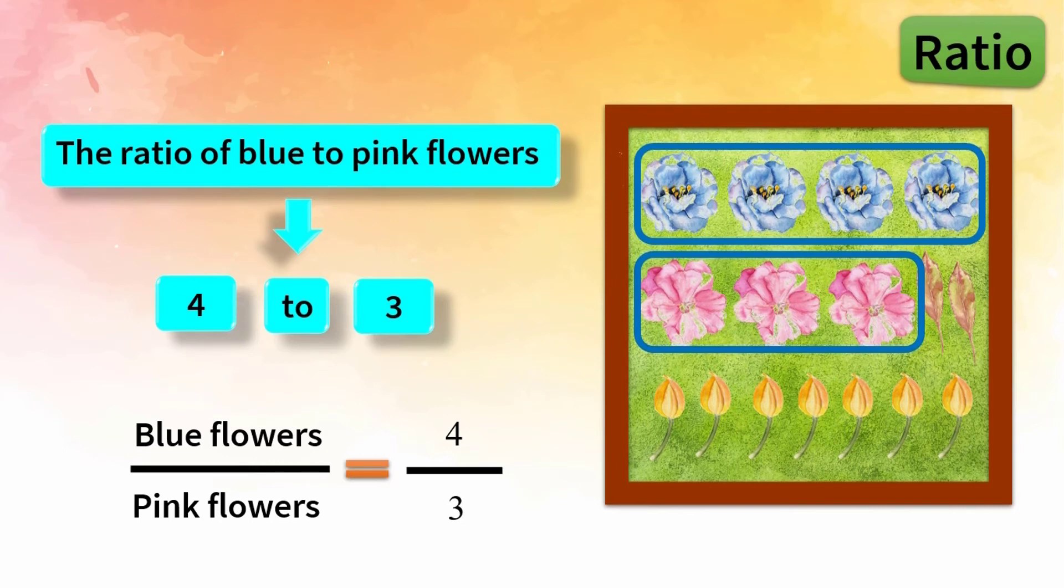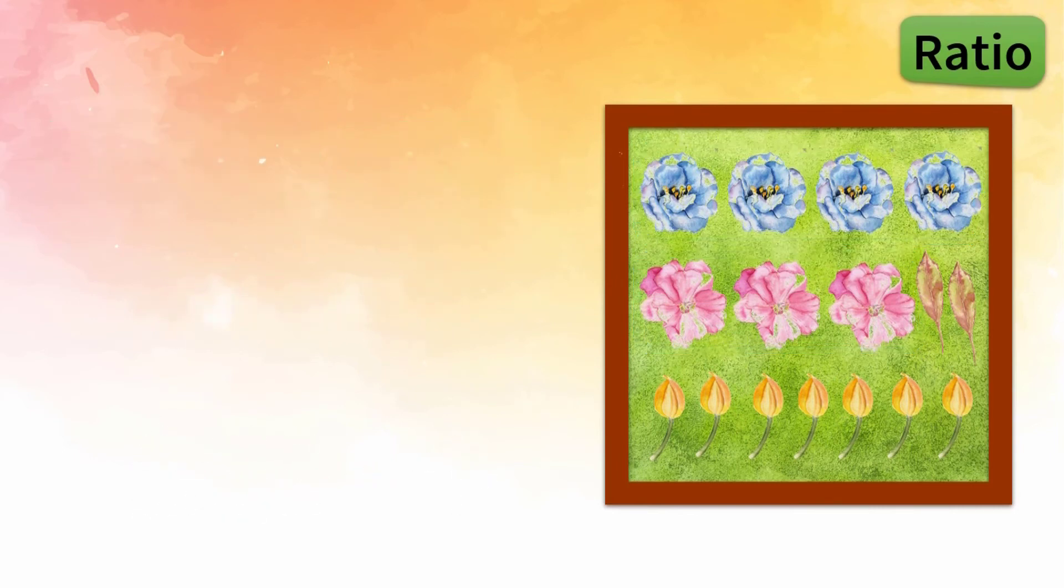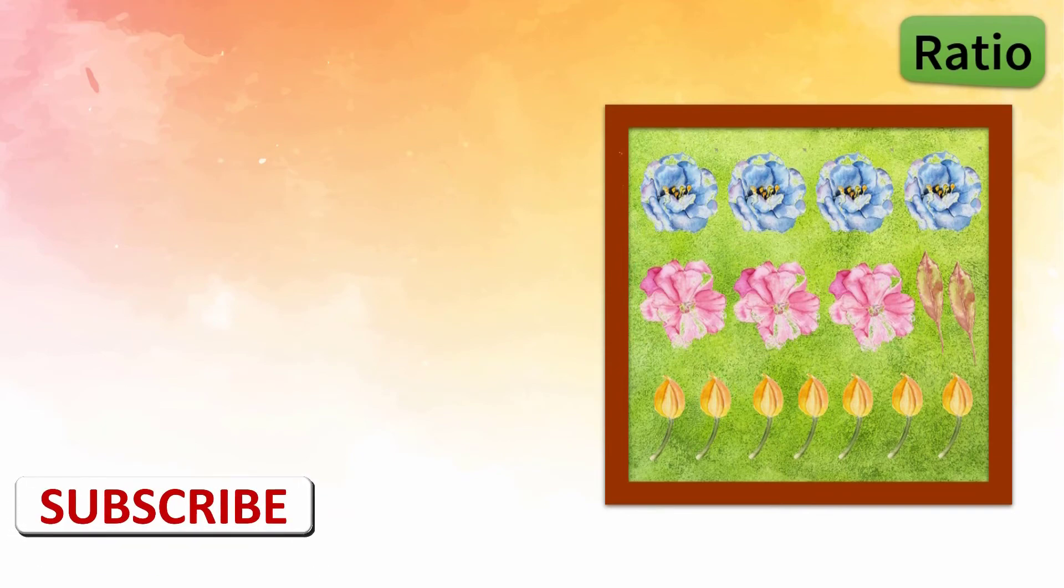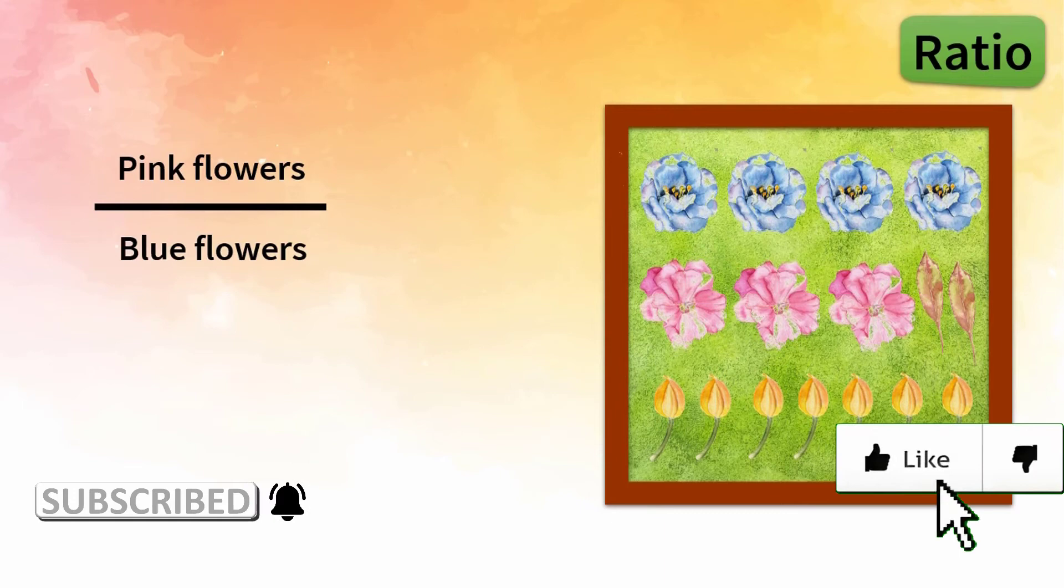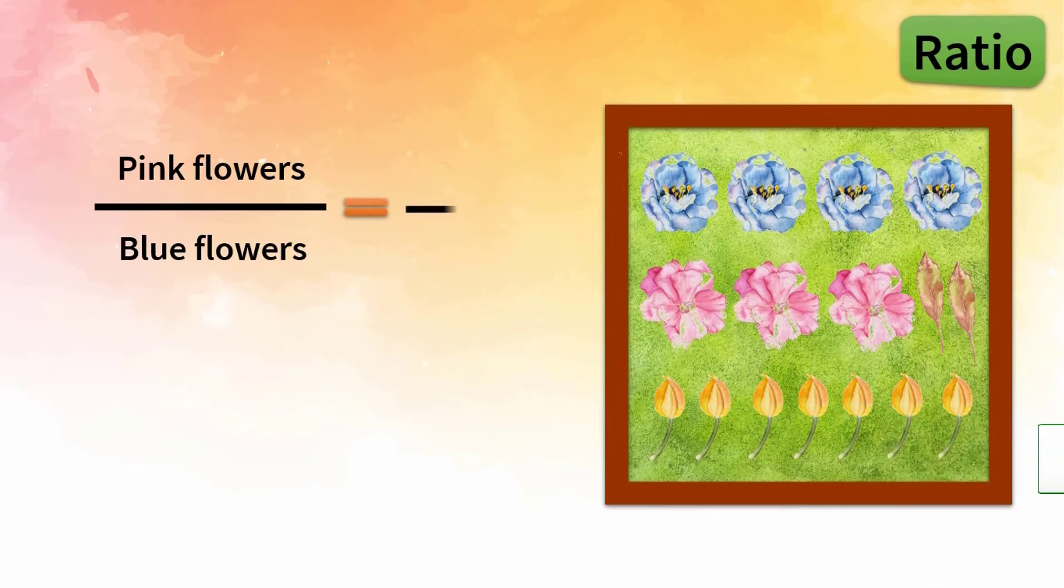Other ways of comparing plants in my garden are also possible. The ratio of pink to blue flowers can also be used as an example. As we counted blue and pink flowers before, it's not necessary to repeat that stage. So the ratio of pink flowers to blue flowers is 3 to 4. Be careful, we don't say three fourths.